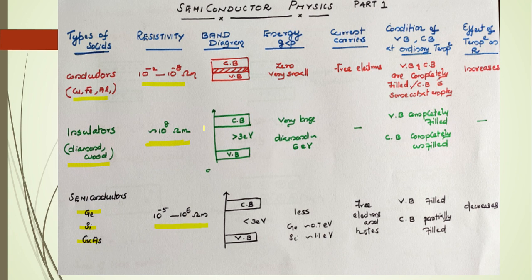The very important concept is the energy band diagrams of conductors, insulators, and semiconductors. For conductors, the energy gap is zero — the conduction band and valence band are overlapped. For insulators, the energy gap is greater than 3 electron volts; for diamond it is around 6 electron volts. For semiconductors, it is less than 3 electron volts.